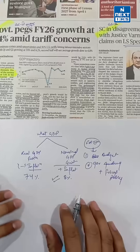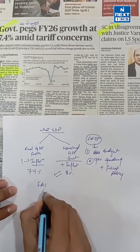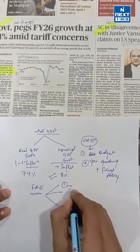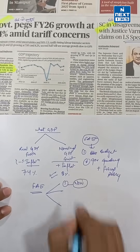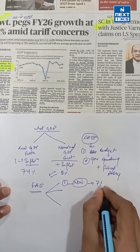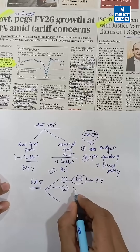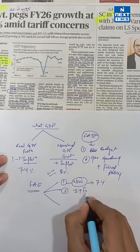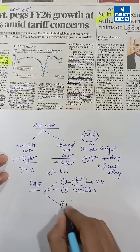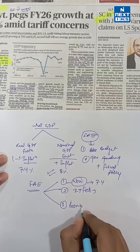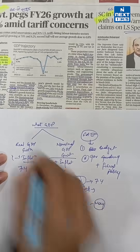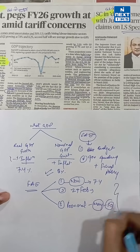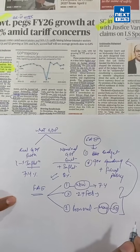The government releases three advance estimates. The first one is now, with recent data showing growth of 7.4%. The second one will come on 27th February. The third one will be provisional data, which will come in May — May 30th. This will help in planning of the government budget.